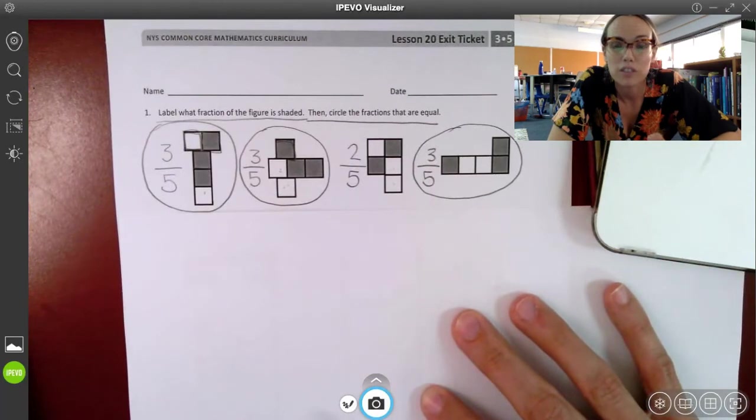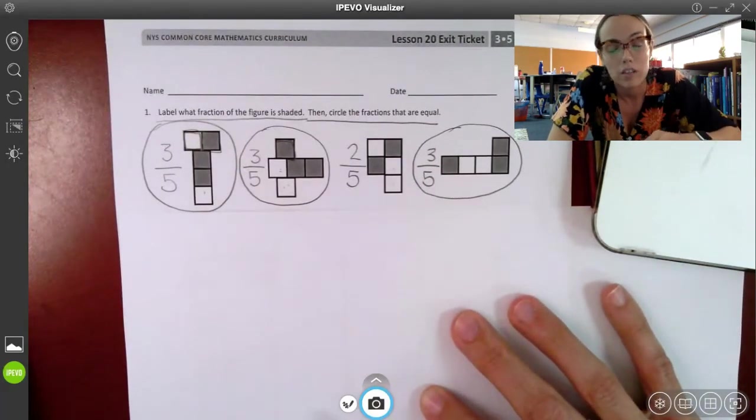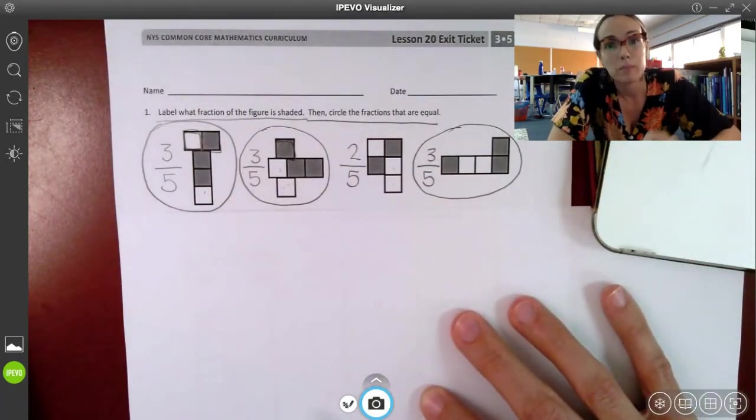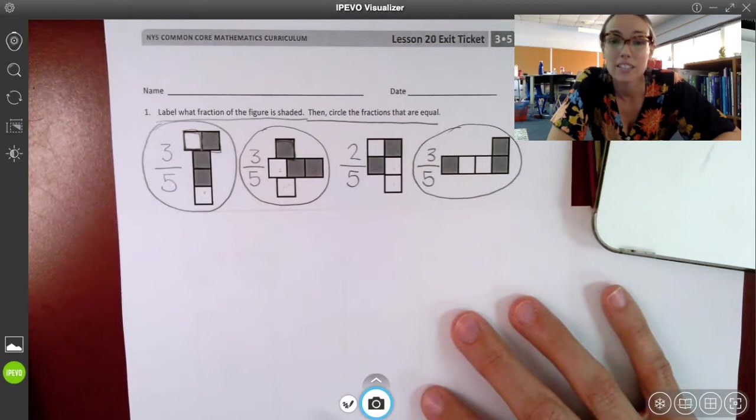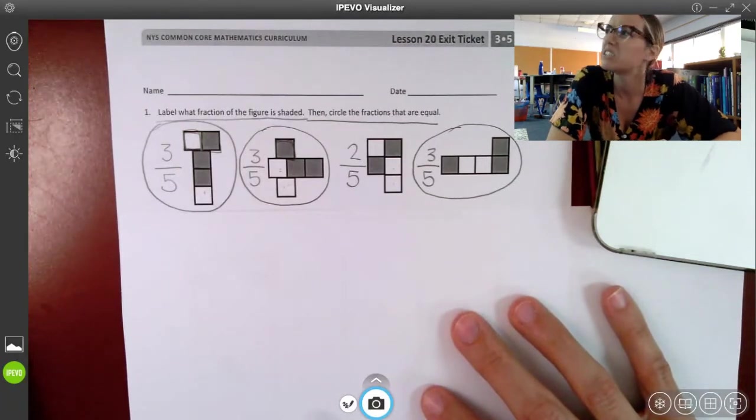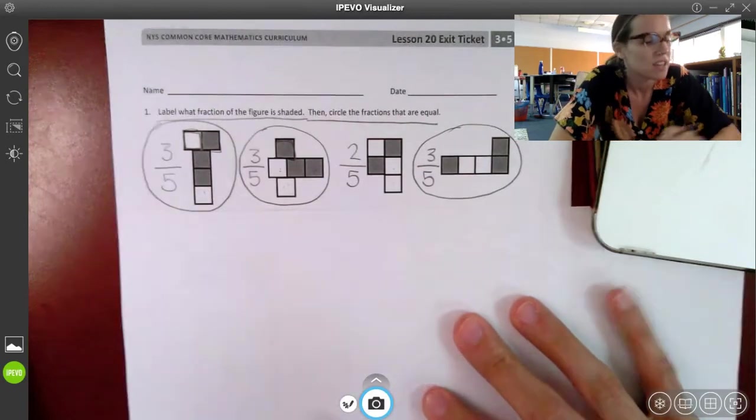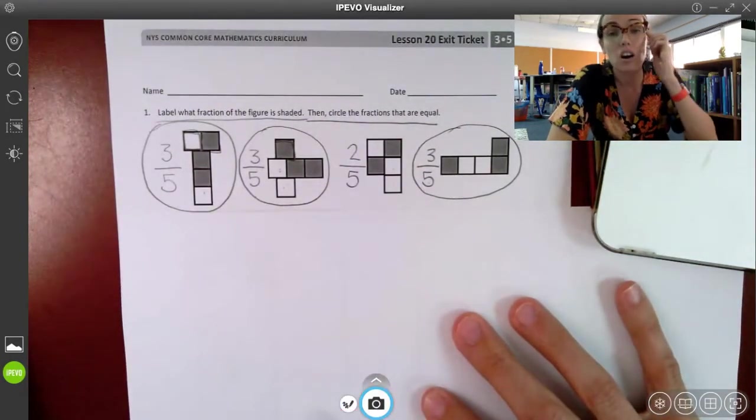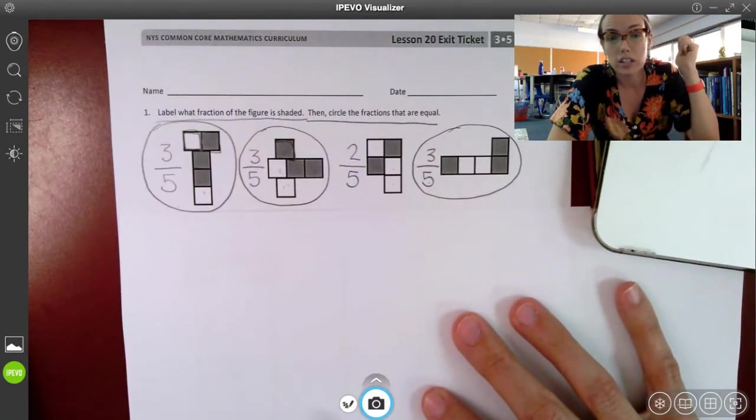There's a special word for this. It's called equivalent. When fractions are equal, we call them equivalent fractions. The base there being equal, and the suffix being ivalent. Maybe there's like a double suffix on that. Equivalent. So, three-fifths, three-fifths, three-fifths, these are all equal fractions. They're all equivalent fractions.